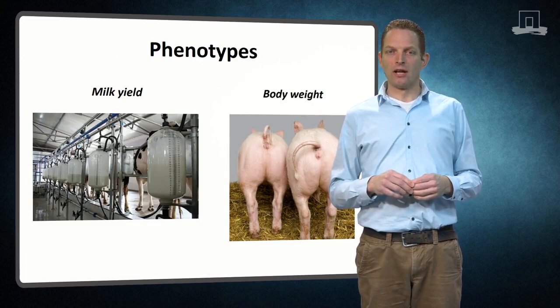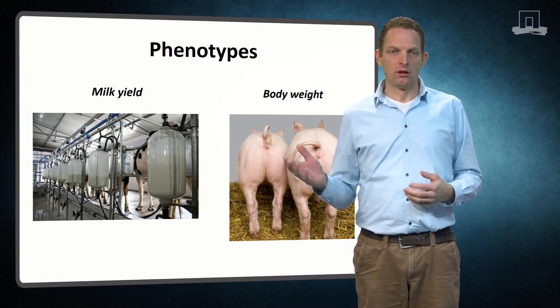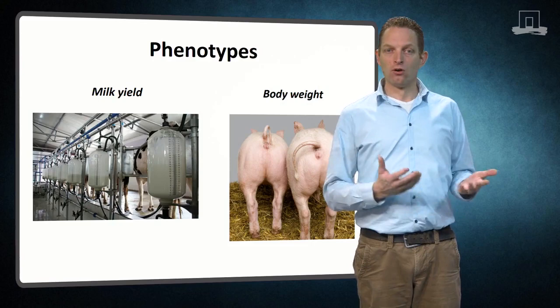Common phenotypes used for selection are for instance milk yield in dairy cattle and body weight in pigs. Body weight can easily be measured for each animal, while milk yield can only be observed in females.